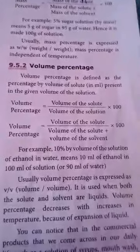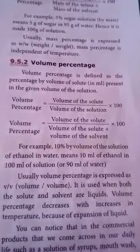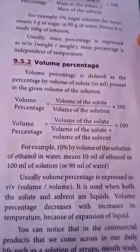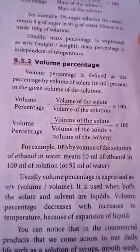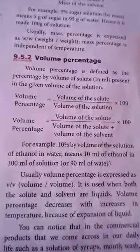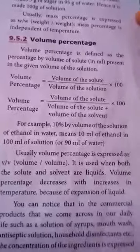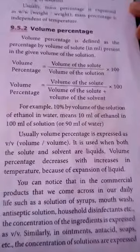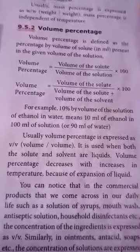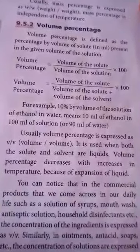Volume percentage equals the volume of the solute divided by the volume of the solute plus volume of the solvent, into 100. For example, 10% by volume of ethanol in water means 10 ml of ethanol is in 100 ml of solution — that is 90 ml of water plus 10 ml of ethanol. Usually, volume percentage is expressed as V by V — volume by volume. It is used when both the solute and solvent are liquid.